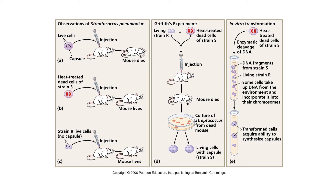Griffith wrote a paper hypothesizing that something had transformed the living R strain into living S strain. He was hopeful that after publishing the paper, somebody else would figure out what the transforming factor was. Avery, McLeod, and McCarty later determined that the transforming factor was DNA.